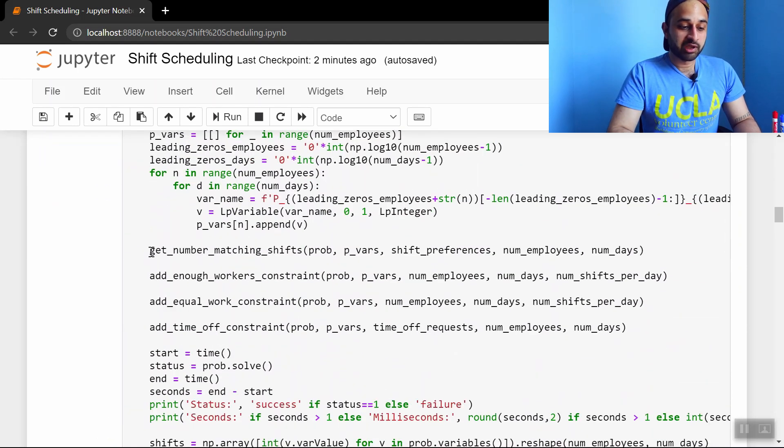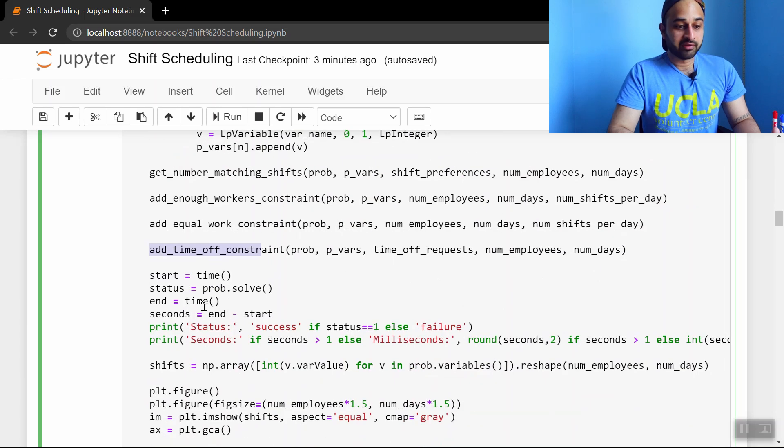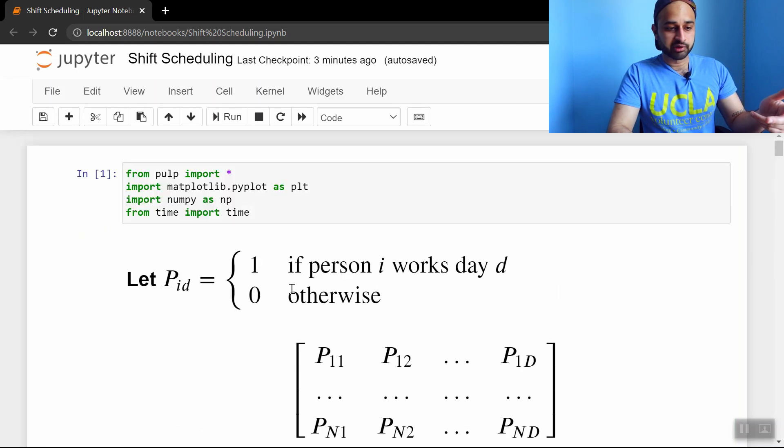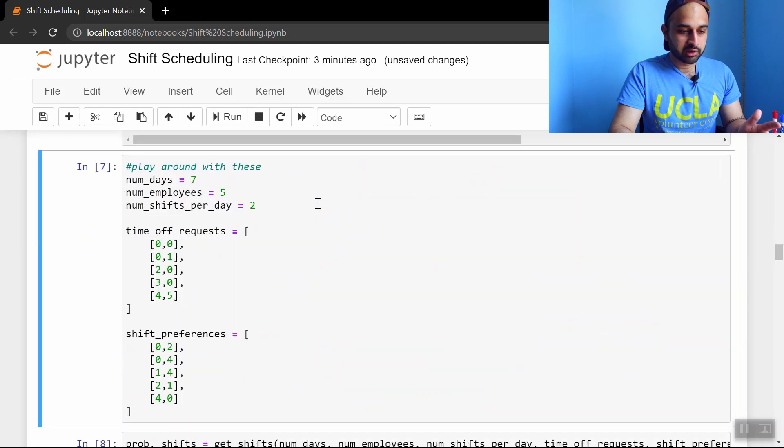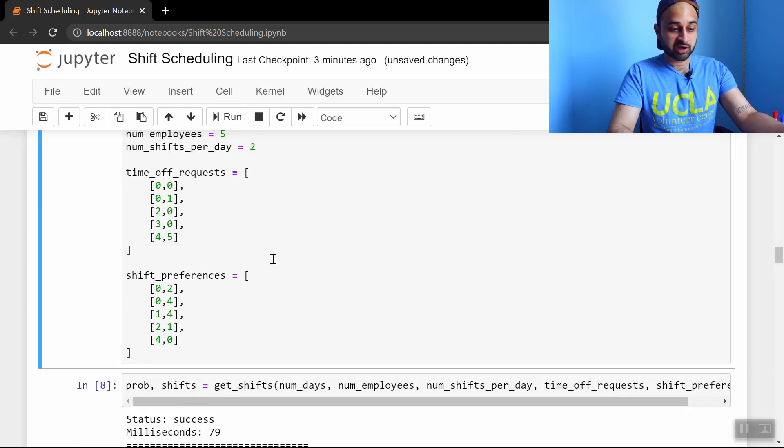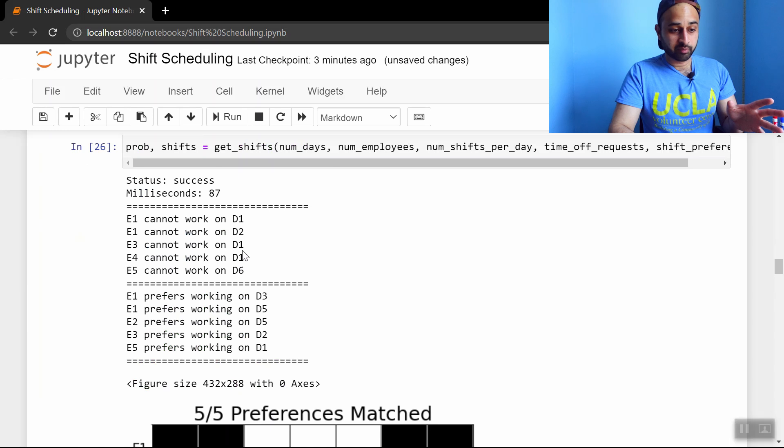while obeying all the following constraints that we just saw before. And so here's the driver code. We see that we add the number of matching shifts objective function, we add the enough workers constraint, the equal work constraint, the time off constraint, and then solving it is just as easy as saying problem dot solve. So it just reads really nicely, and then we print out a bunch of stuff. So I mostly just want to walk you through a couple of examples of this to show you just how powerful it is. So let me run this from the beginning, because this notebook might be a little stale. So running all this, we're going to start with a very basic case, the same case we saw on the whiteboard. We have seven days to schedule and we have five employees, two shifts per day, and a couple of time off requests, couple of shift preferences here. We go ahead and try to solve the problem, we get a success within 87 milliseconds. Okay, let that sink in. This problem, which might have taken us like five minutes to work out by ourselves, and even then we might not have gotten an optimal solution, takes 87 milliseconds to successfully solve using this library.